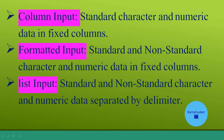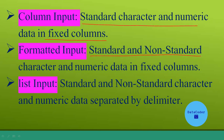The first method is the column input method. By applying column input method, we can read standard character and numeric data which is in fixed columns. If the data is standard and it's in fixed columns, then we can read the data by applying this column input method and create a SAS dataset. The next method is formatted input. Using formatted input method, we can read both standard and non-standard data which is in fixed columns. The last method is list input method. By applying list input method, we can read standard and non-standard character and numeric data where the data are separated by a delimiter.